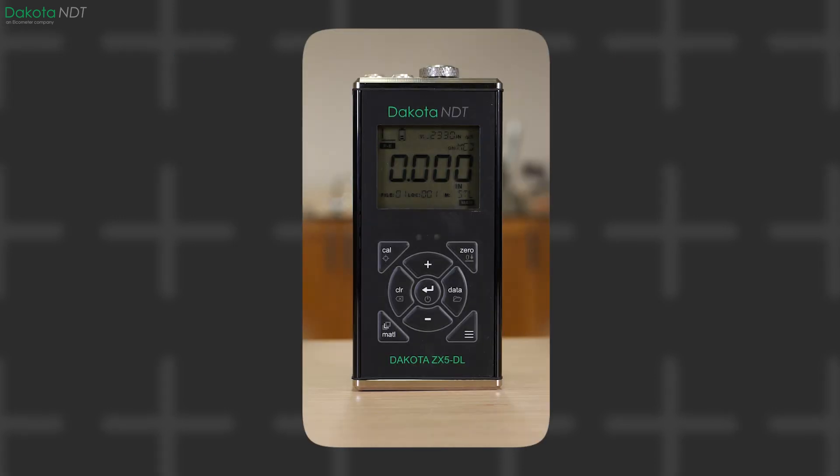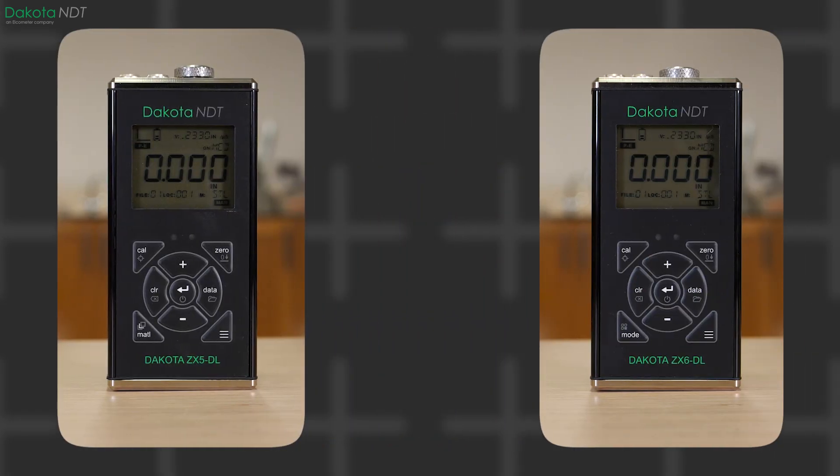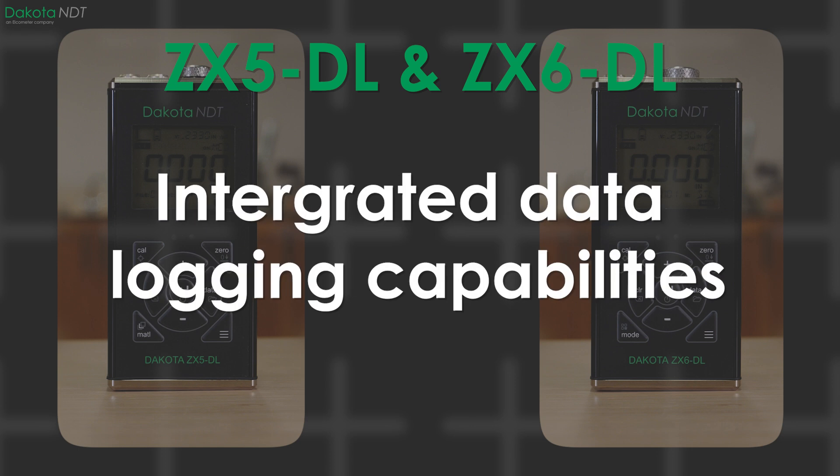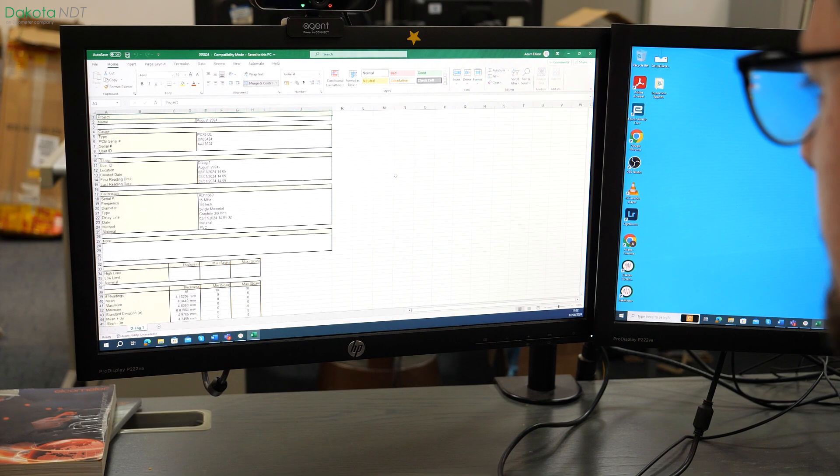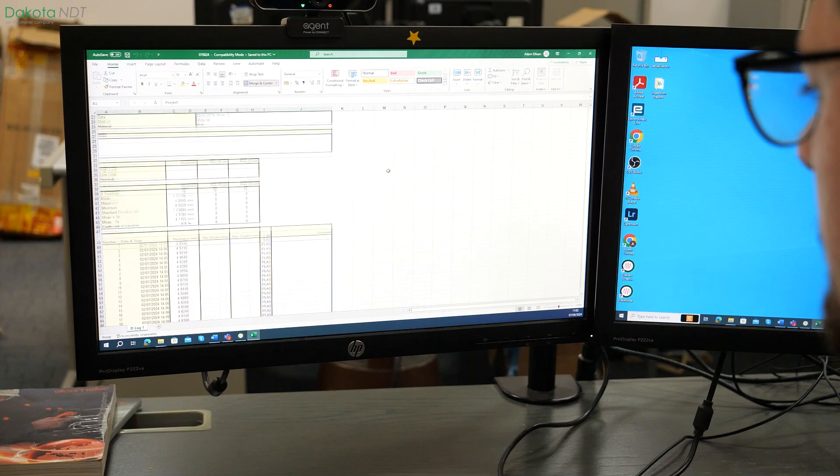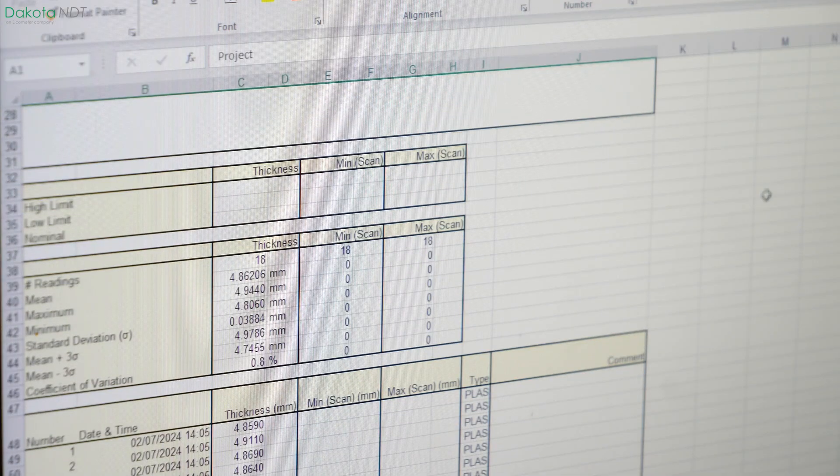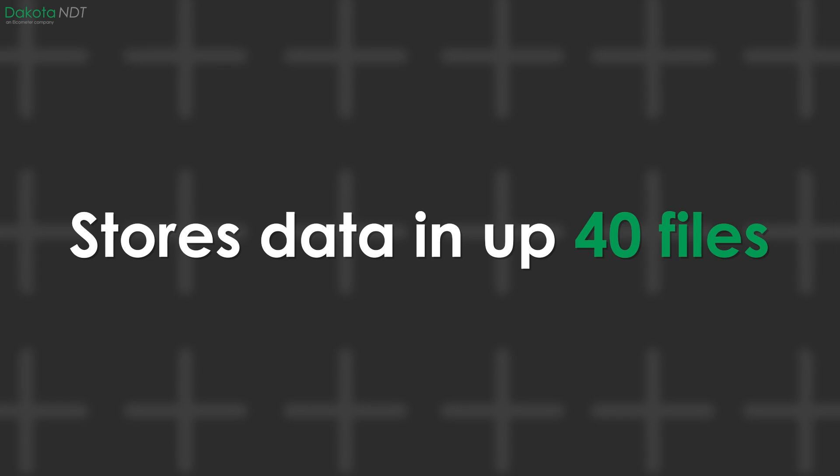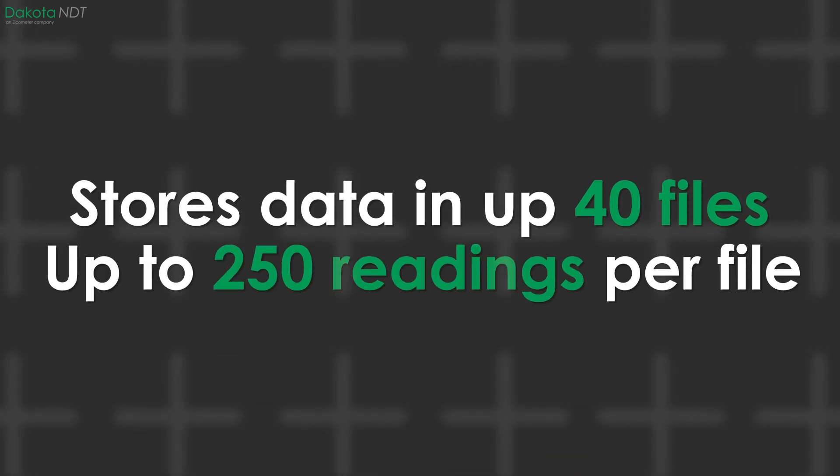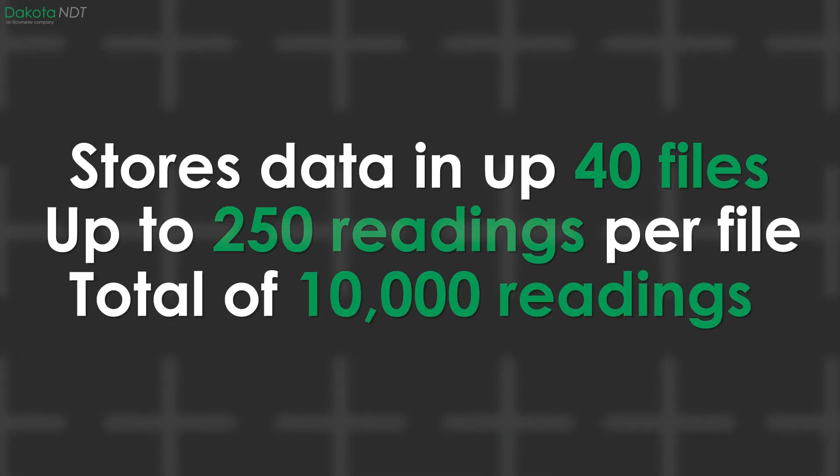Both the ZX5DL and ZX6DL have integrated data logging capabilities designed to store a substantial amount of thickness measurements for analysis and reference. Each gauge is capable of storing data in 40 files, and each file has the capacity to hold 250 readings, resulting in a total storage capacity of 10,000 readings per gauge.